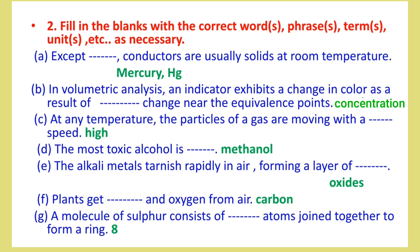E: The alkali metals tarnish rapidly in air, forming a layer of oxides, which can be removed.